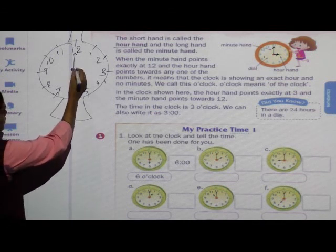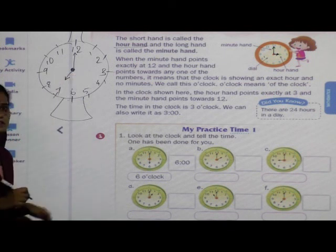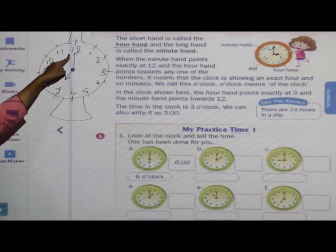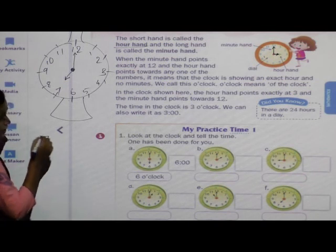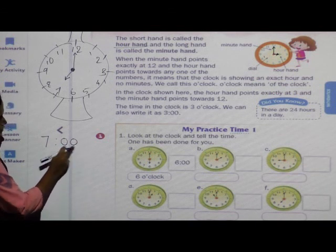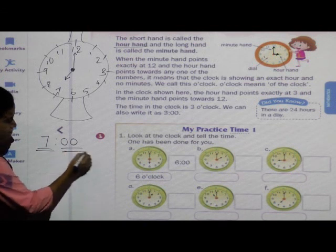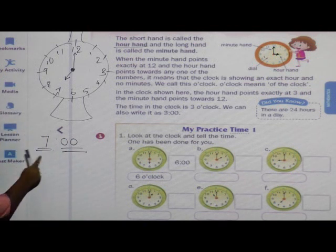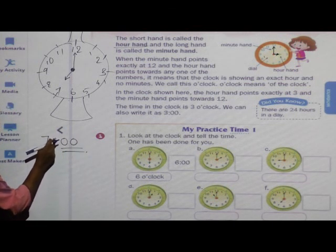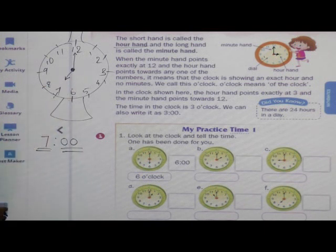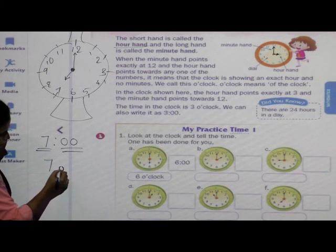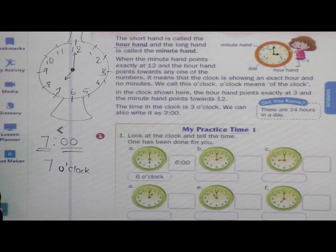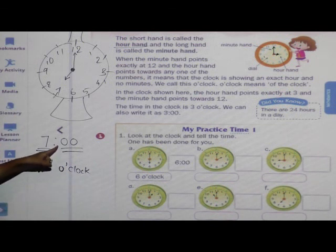Like this — if I draw the hour hand towards seven, then what is the time? See, minute hand is at twelve and short hand, the hour hand, is at seven. So the time is seven o'clock. How will you write it? In two ways — you can write 'seven o'clock' or '7:00'. Before the dots we write hours, and after the dots we write minutes. Since there are no minutes, we write zero. So it is 7:00.